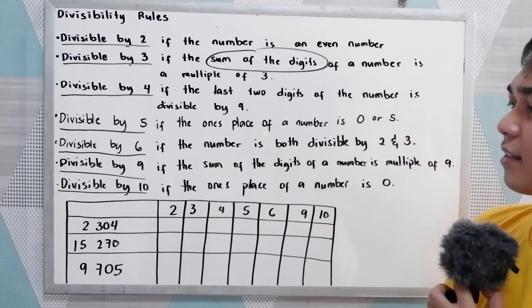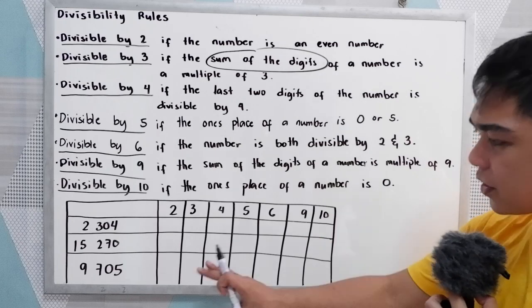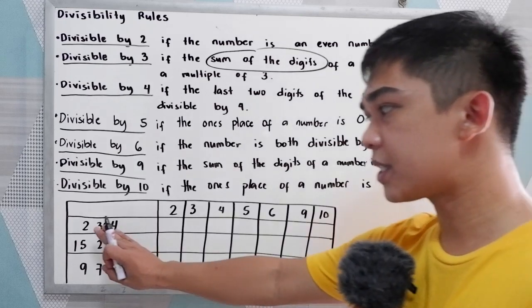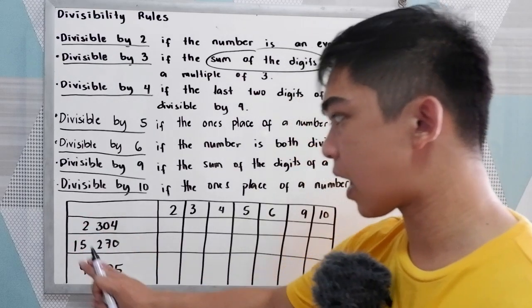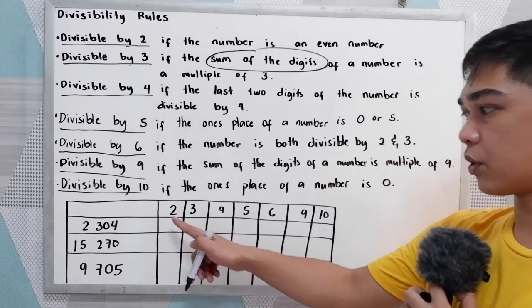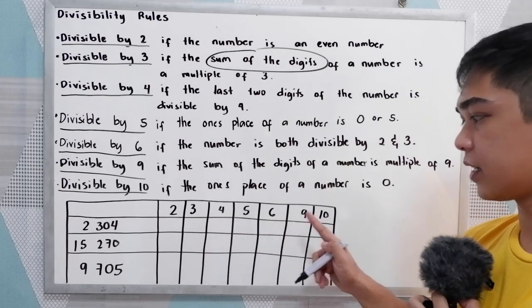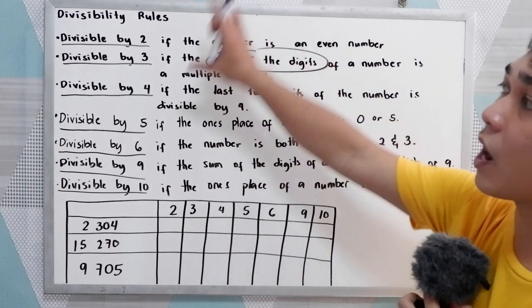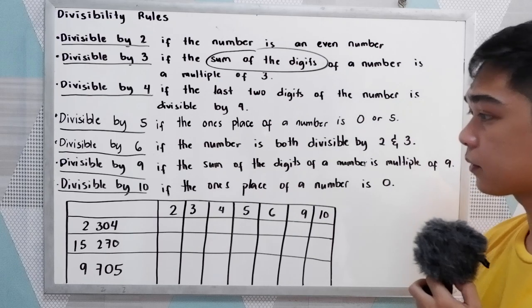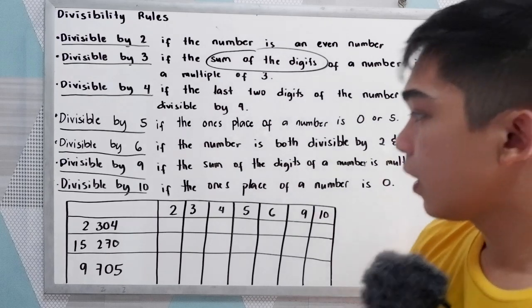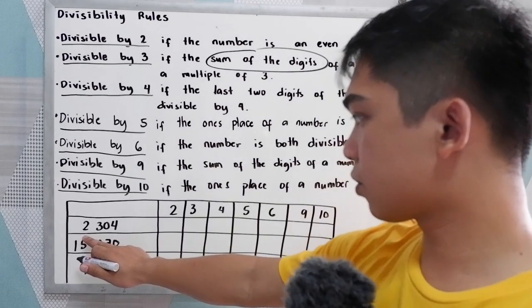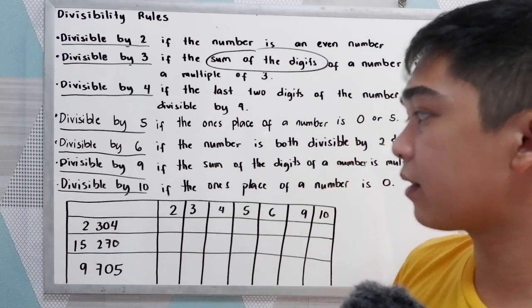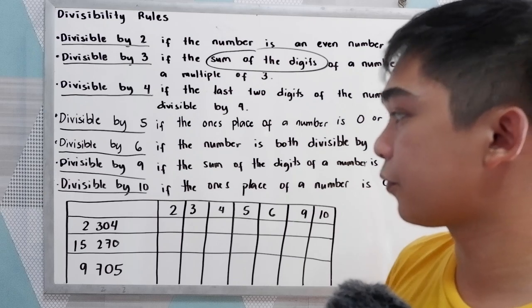To further understand, let's have this table. We're going to check if these numbers are divisible by 2, 3, 4, 5, 6, 9, and 10, to apply our divisibility rules. Our first number is 2,304.